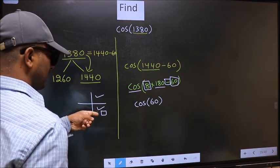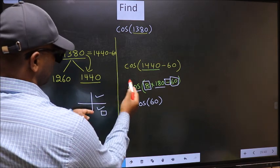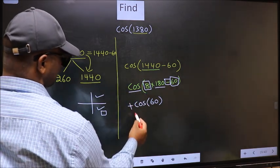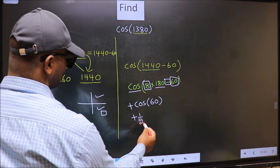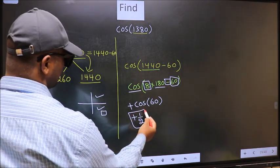And in the fourth quadrant, cos is positive. So we should put plus. So cos 60 is 1 by 2. This is our answer.